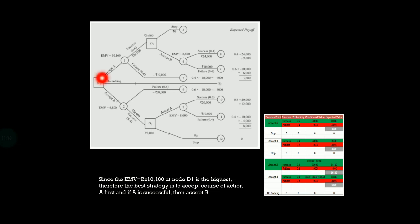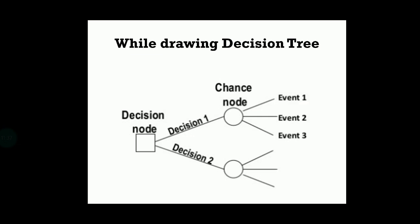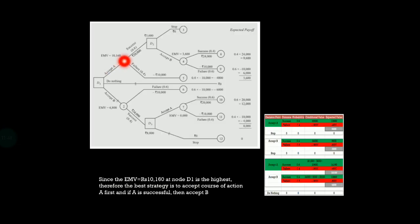Now look here — you start with D1. D1 is the decision node and that is where you start. You can take three alternatives: you can either accept A, accept B, or do nothing. When you do nothing, you will get zero — there is no profit coming up. Once you accept A, you reach a chance node. This chance node is because you don't have to take a decision there. Once A is accepted, it can go for a success or a failure — you don't have a decision to be taken. It will either go for success or failure.